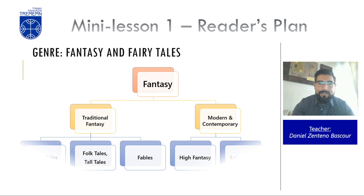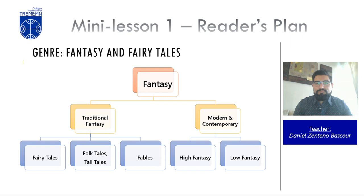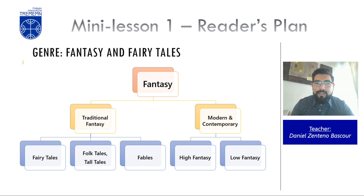Now let's look at the genre: fantasy. Fantasy is a very broad genre that includes everything made up or coming from the author's imagination. There are two divisions: traditional fantasy and modern and contemporary fantasy — more of a historical division than one based on different characteristics. Traditional fantasy includes oral tradition later written down by authors like the Brothers Grimm or Charles Perrault, and covers fairy tales, folk tales, tall tales, and fables.